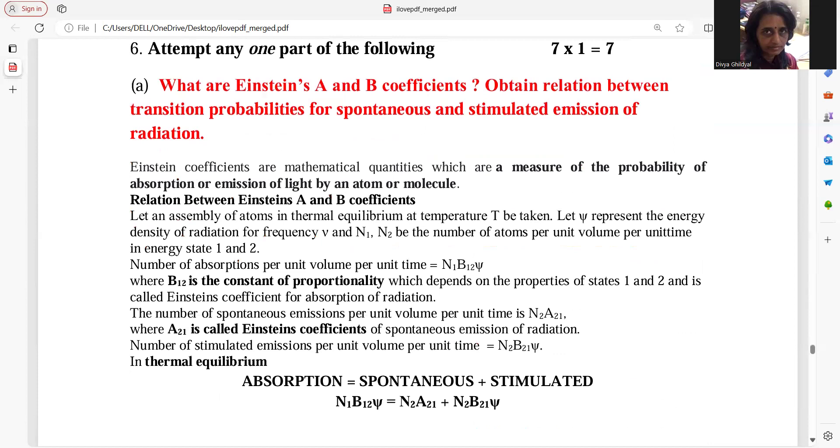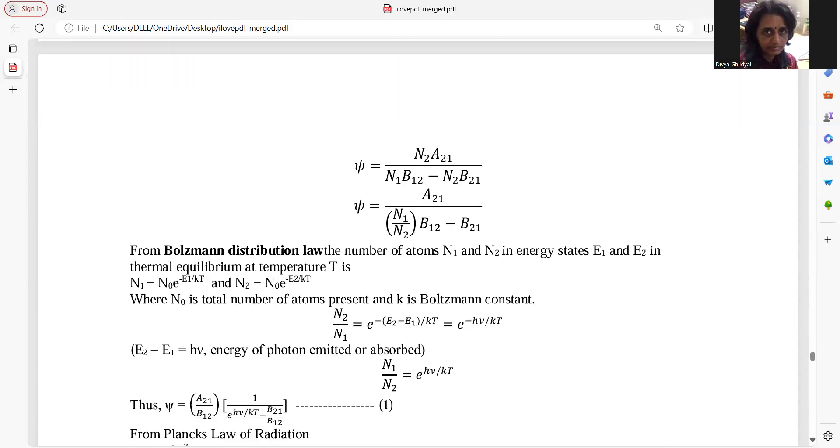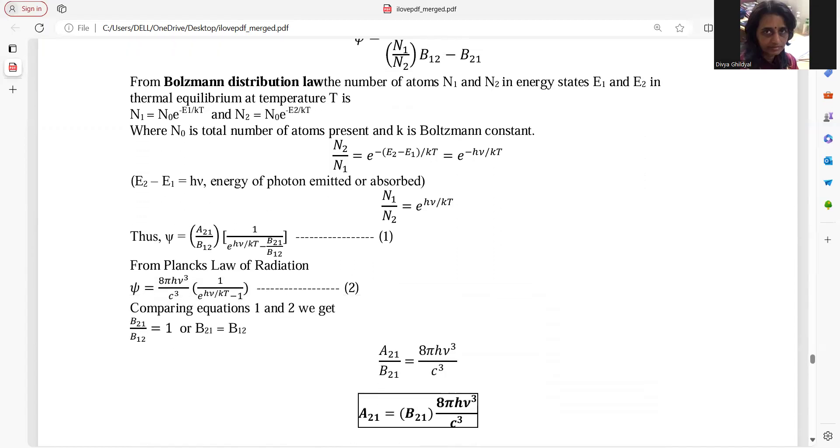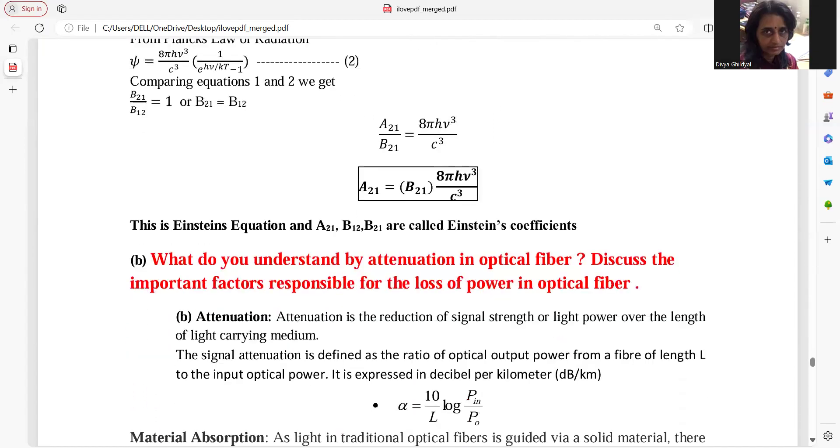Einstein coefficient, very easy. Laser question, relation between them. You just have to derive the relation between Einstein coefficients. One is for absorption, other is for transition. And you get your answer.